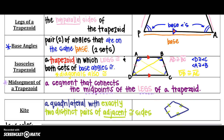The last quadrilateral we will learn for this section and chapter is called a kite. The kite is a quadrilateral with exactly two distinct pairs of adjacent — remember, that means next to — congruent sides. Notice that the adjacent sides are going to be congruent.